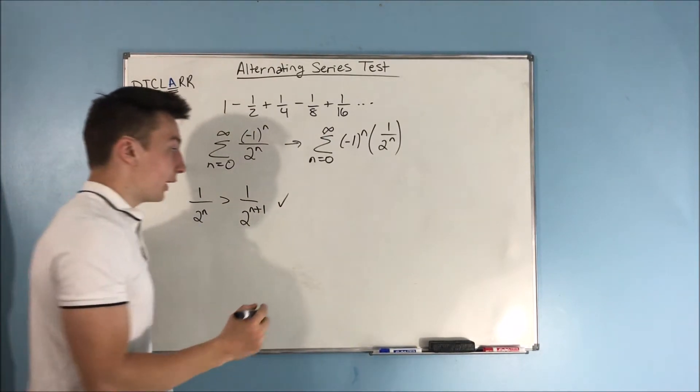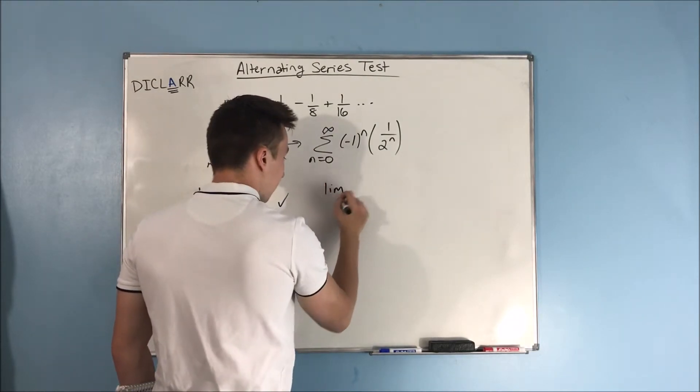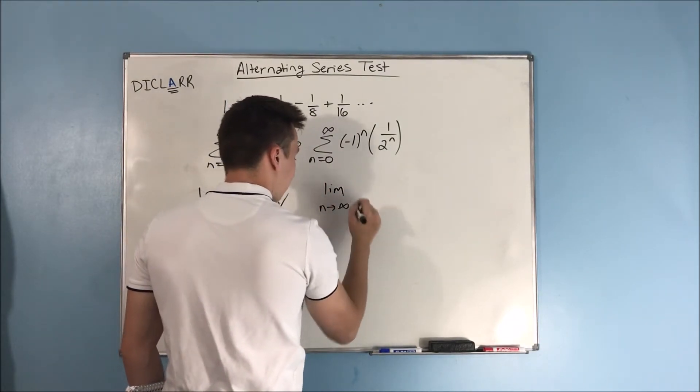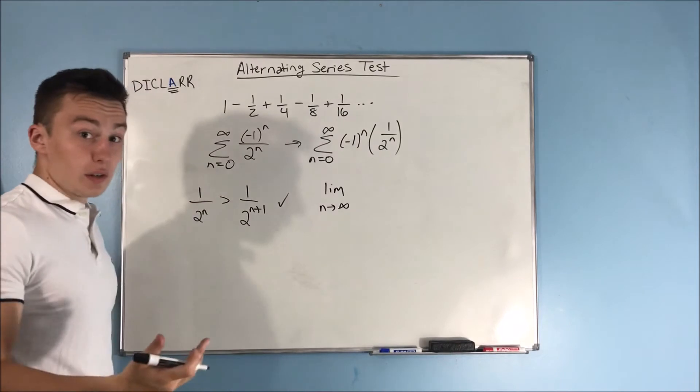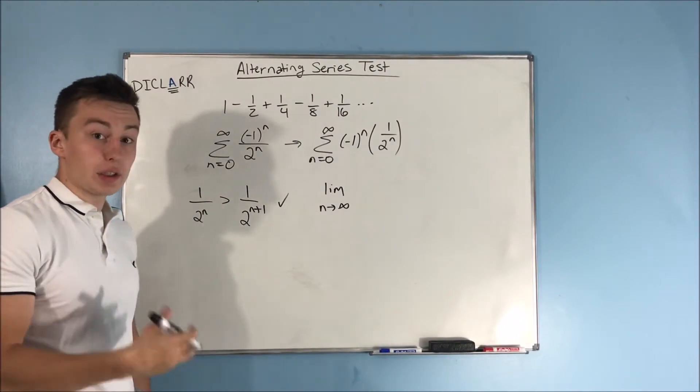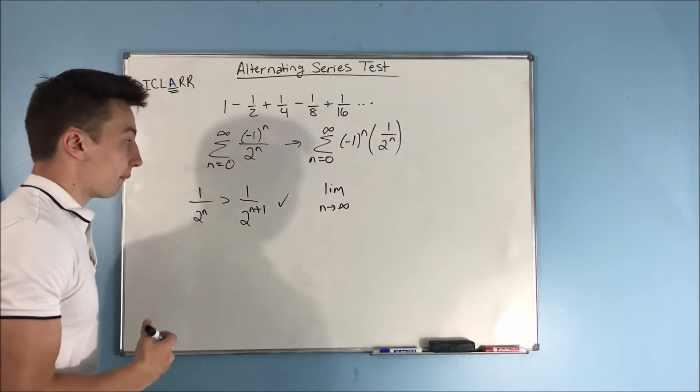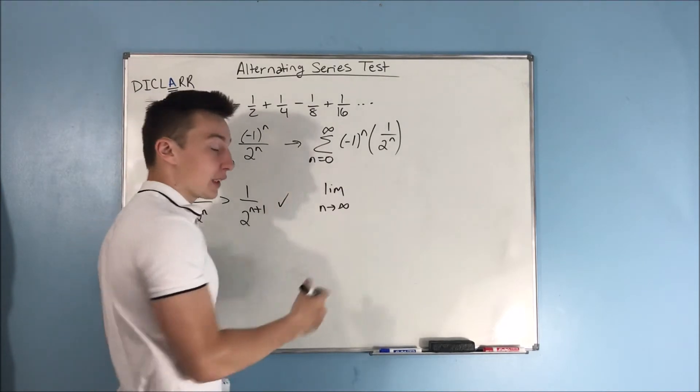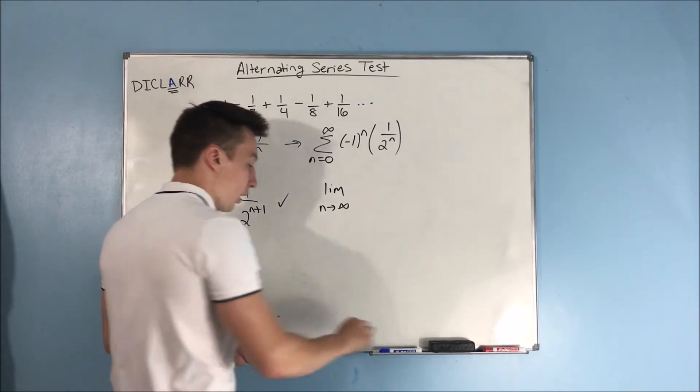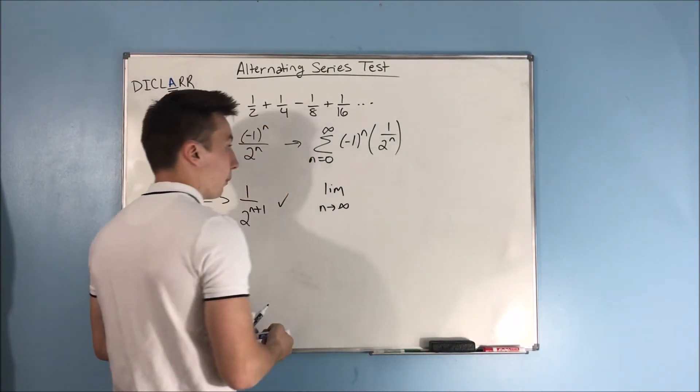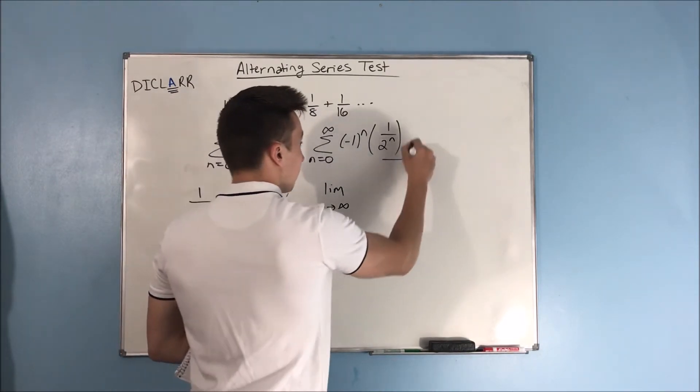The other thing that we need to check is if the limit as n approaches infinity equals 0. If it does, then we can say that this is convergent by the alternating series test. Now, remember what we're putting in here. It's just that b sub n. And we know that our b sub n, as I said before, is just this piece right here.